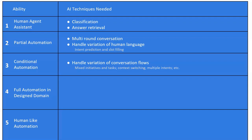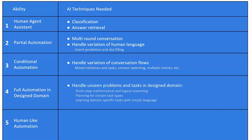Once we reach level three, the virtual assistant can handle the variation of human language and the variation of conversation flow, and can achieve conditional automation. For level four, the virtual assistant needs to be able to handle unseen problems and tasks in the design domain. That means it needs the ability to do multi-step mathematical and logical reasoning and do some planning for certain tasks. The virtual assistant also needs to be able to learn domain-specific tasks with simple language, be outcome-driven and goal-oriented, easy to develop, and solve long-tail problems itself without training. That's level four.